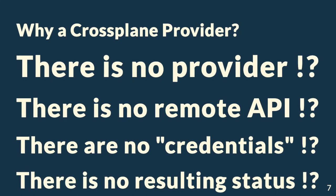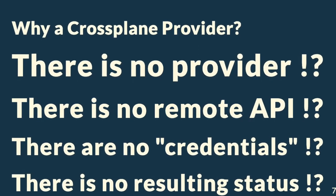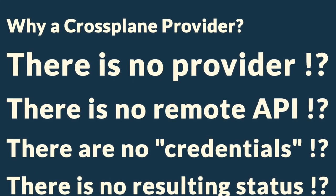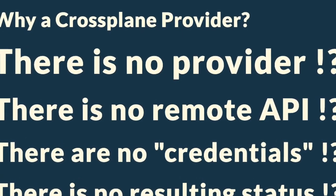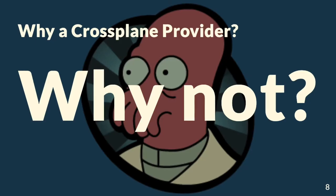Wait — a Crossplane provider? There's no provider here. There's no CloudInit.com and there's no remote API. Crossplane providers have this concept of credentials and provider configuration, and usually some sort of status when the resource is done. You don't have any of those things with CloudInit. So why are we going to make a provider at all? This doesn't have to be a Crossplane provider. You could make a custom controller that writes the user data you want, or writes out a config map that we can then read in.